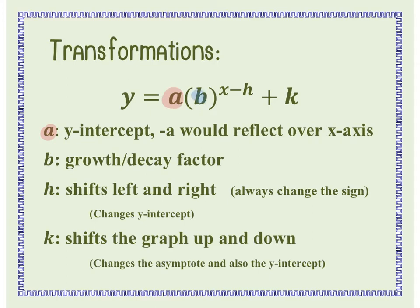B is our growth and decay factor. If b is greater than 1, it's exponential growth. If b is between 0 and 1, it's exponential decay. Whatever value you see — if you see a 4, every number is being multiplied by 4. If you see 0.25, every number is decreasing by 0.25 each time.